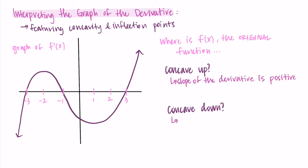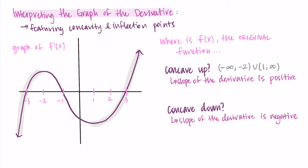Concave down occurs where the second derivative is negative — that's the slope of the derivative. So we're looking for where this graph has a negative slope. This graph of the derivative has a positive slope from negative infinity to negative 2, and from 1 to infinity — so those are where the original function is concave up. Then the original function is concave down when the slope of the derivative is negative, which is from negative 2 to 1.